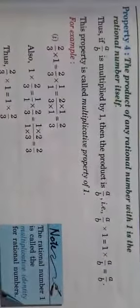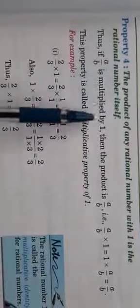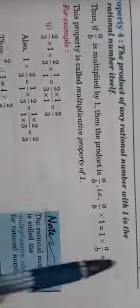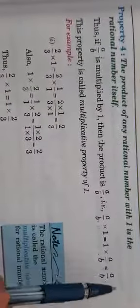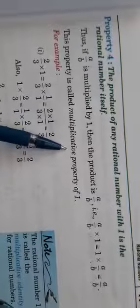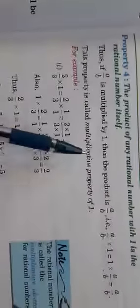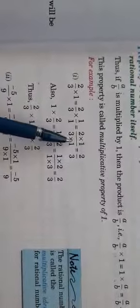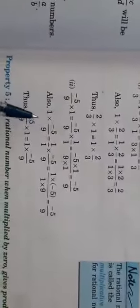Property four: the product of any rational number with one is the rational number itself. Whenever we multiply any number with one we get the same number. Thus, if a upon b is multiplied by 1, then the product is a upon b — that is, a upon b into 1 equals a upon b. This property is called the multiplicative identity of 1. The additive identity is 0 and the multiplicative identity is 1. For example, 2 upon 3 into 1 equals 2 upon 3.